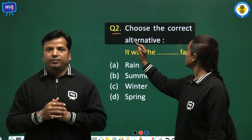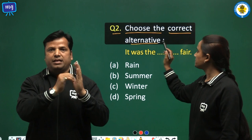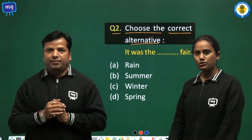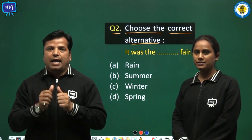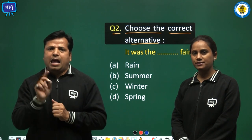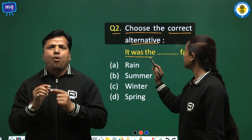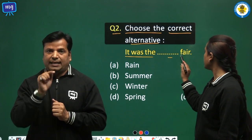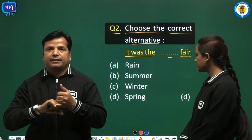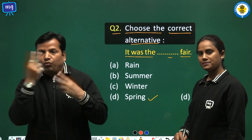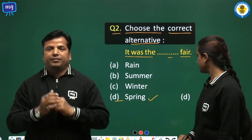Question Number 2: Choose the correct alternative. In this question we will choose a correct answer and write it in the bracket. It was the blank fair — the correct answer is spring, so we will write D in the bracket.